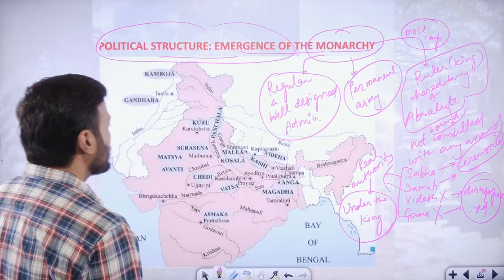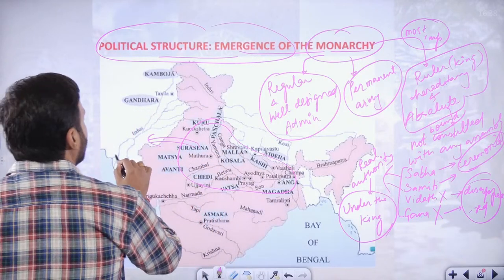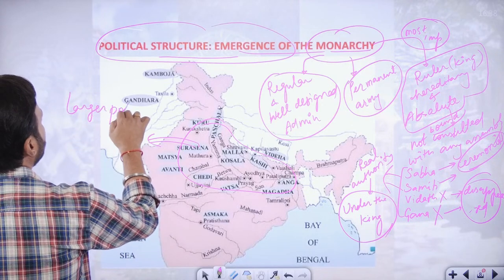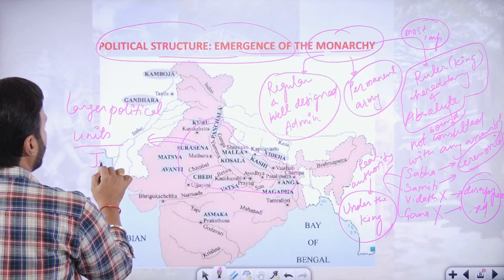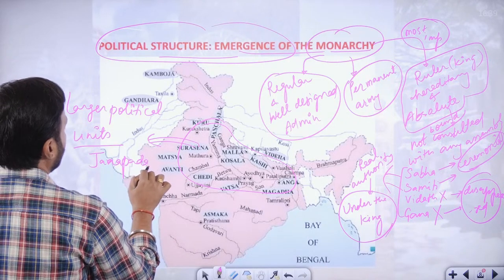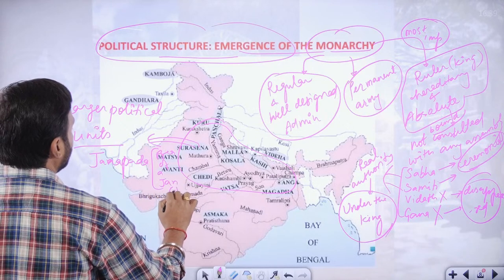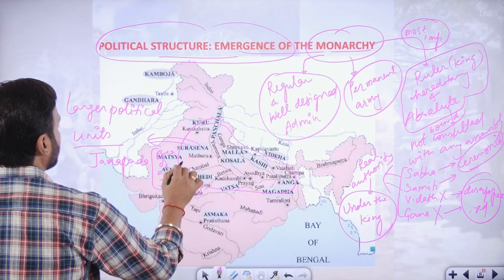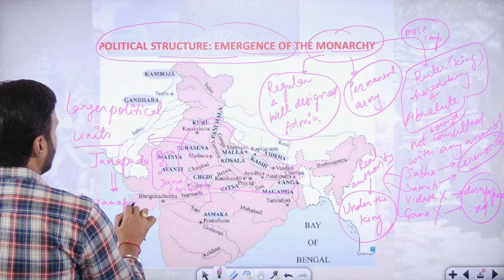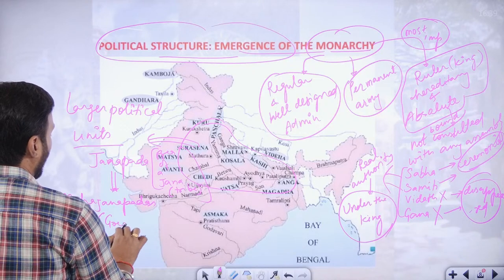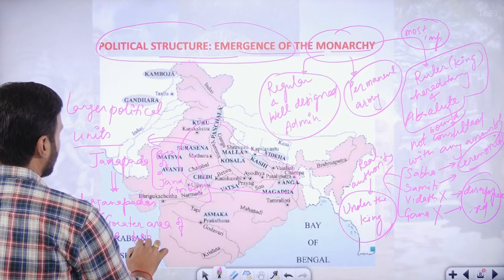Most of the Northern Plains had become larger political units — from Janapadas. Jan means tribe. That became the Mahajanapada — the greater area of a tribe.